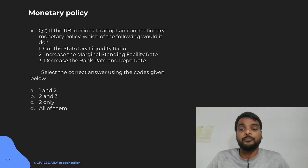So, let's read the statements. Cut the statutory liquidity ratio - if you cut the SLR, it will inject more money in the economic system, more money in the hand of investors. So, it is not contracting the economy, it will expand. So, it will be a part of expansionary policy. Increase the marginal standing facility rate - it is the rate where RBI gives loan to the bank.